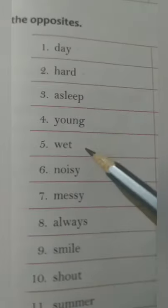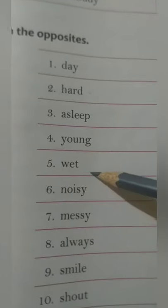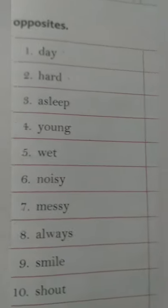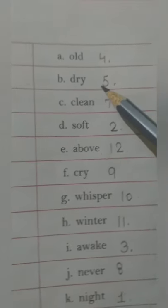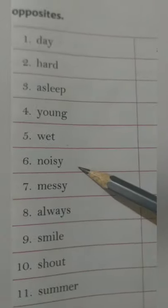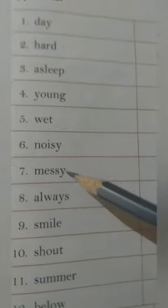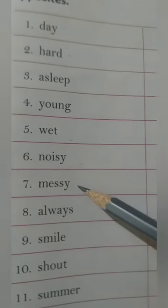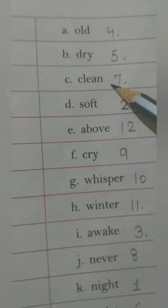Next is wet. Wet matlab gila. Wet ka opposite: dry. Next is noisy. Noisy ka opposite: quiet. Messy means bohat ganda. Messy ka opposite: clean, saaf.